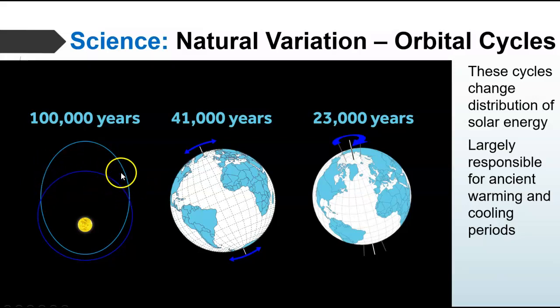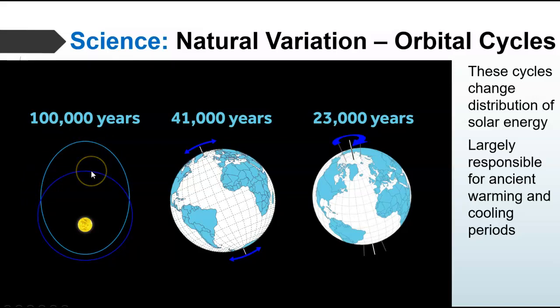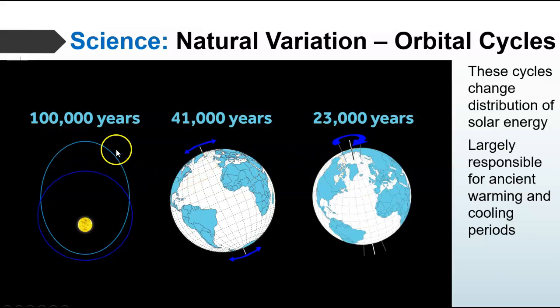These cycles kind of amplify each other and were one of the explanations for why we might have had glacial events in the past where it got colder. The farther away we get, the less heat we get and it can get colder; when these all line up with the farther-away part, it can get colder and even colder, allowing an ice age to occur. We know about these effects and can calculate them in our models.